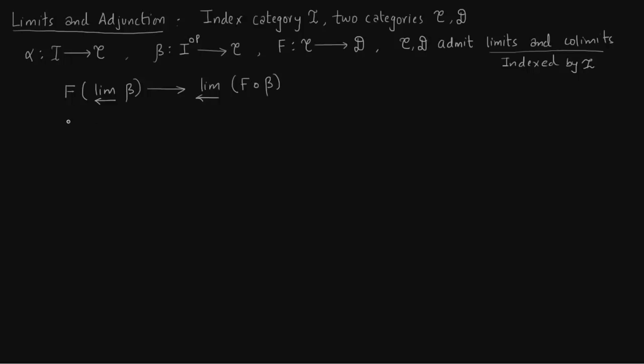Now we are writing about colimit similar to the first case. So we have these two natural morphisms. Again, this follows from the definition. Now we want to number them. Let us number them 1 and 2.